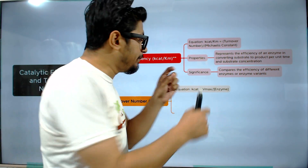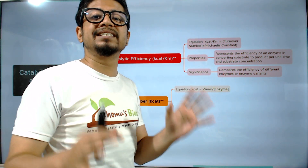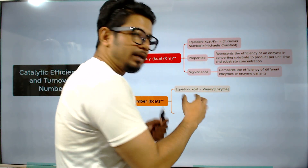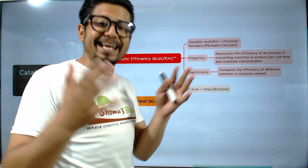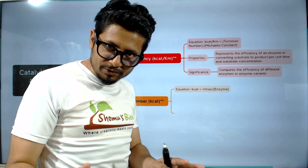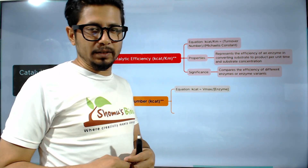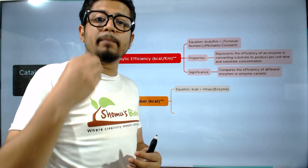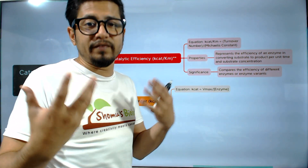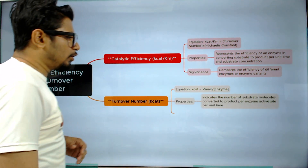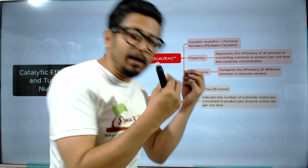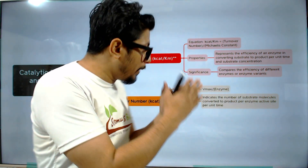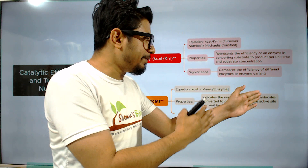Turnover number, on the other hand, is denoted as kcat. Its formula is: kcat equals Vmax divided by total enzyme concentration. So there are two variables — the maximum velocity the enzyme reaction can reach and the total amount of enzyme present.